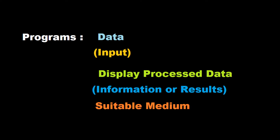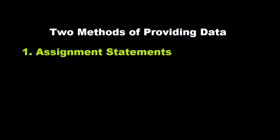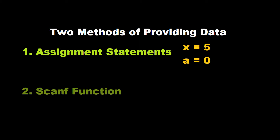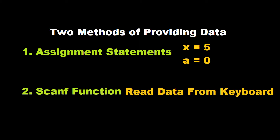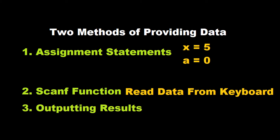In our earlier videos, we have discussed two methods of providing data to program variables. One method is to assign values to variables through assignment statements such as x = 5, a = 0, and so on. We have another method which is to use the input function scanf, which can read data from a keyboard. And for getting results as outputs, we have used extensively the function printf, which sends results out to a terminal.